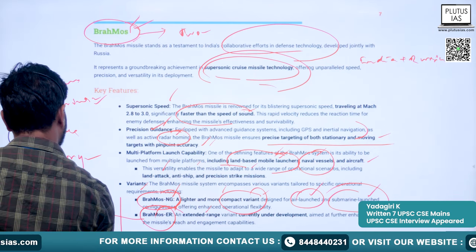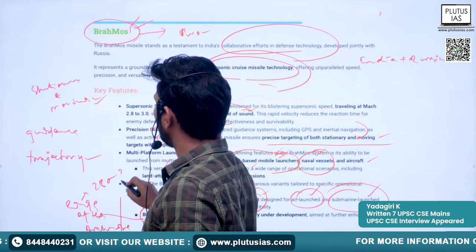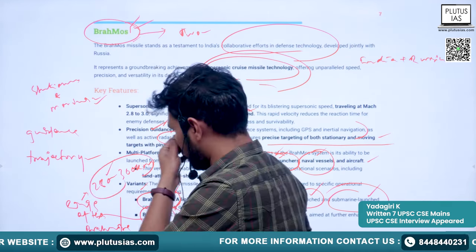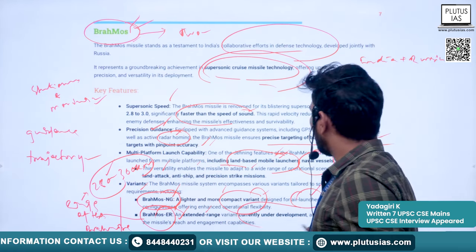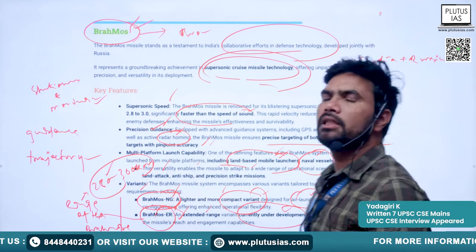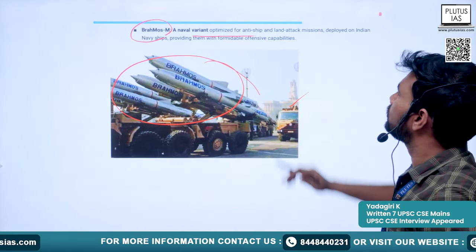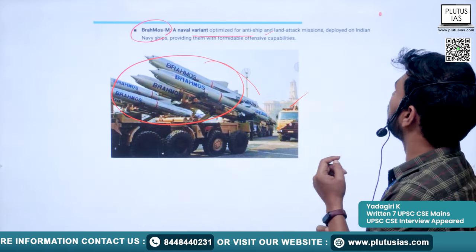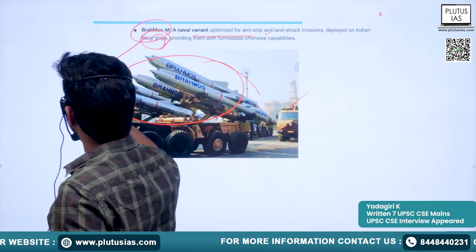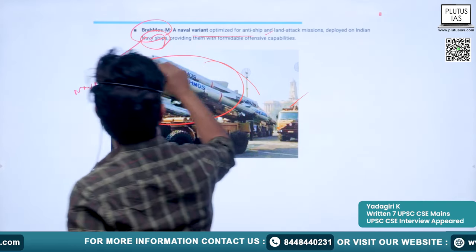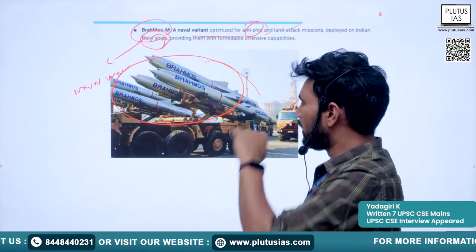BrahMos-ER is aimed at further enhancing the missile's capability. The third variant is BrahMos-M, a naval variant optimized for anti-ship and land-attack missions, deployed on Indian Navy ships. It can target ships and land targets of enemy countries.